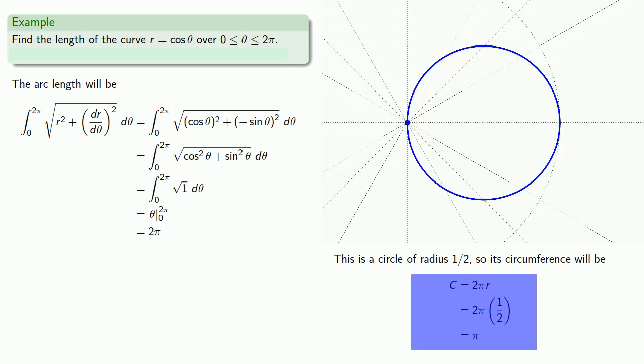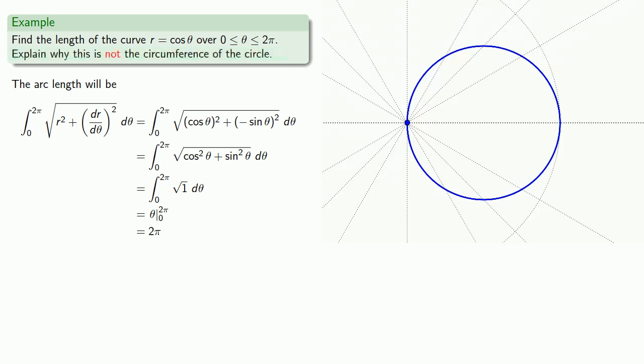Wait a minute. We only expected to get an arc length of π. How did we get this answer of 2π? Did we make a mistake someplace here? So there's something going on here that's a little bit different. So let's add a little bit to this question. Let's try and explain why the answer for the arc length is not actually the circumference of the circle.